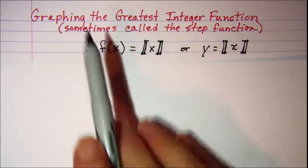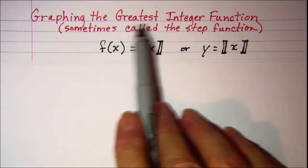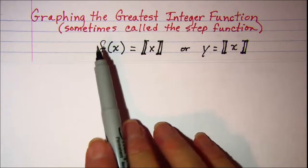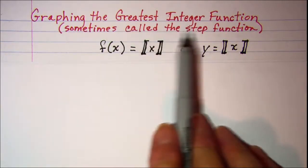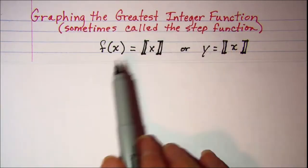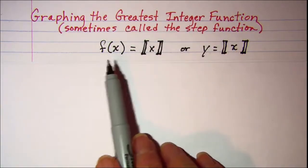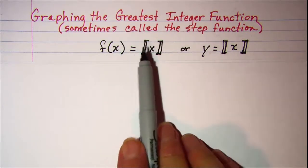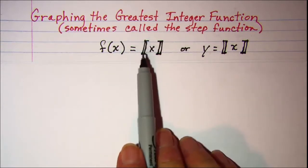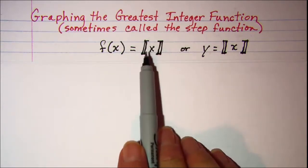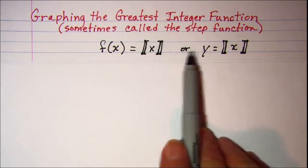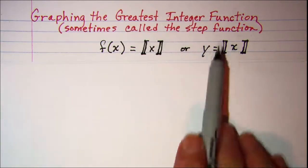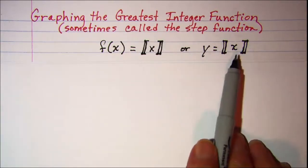In this video we'll be graphing the greatest integer function. This function is sometimes called the step function. The notation you'll see is f equals these double brackets around the argument, or you might say y is equal to the greatest integer of x.